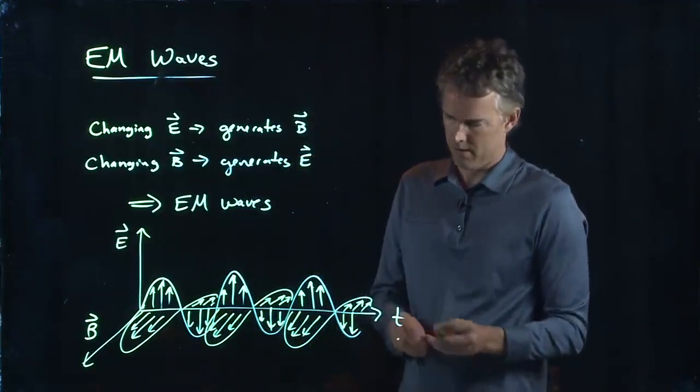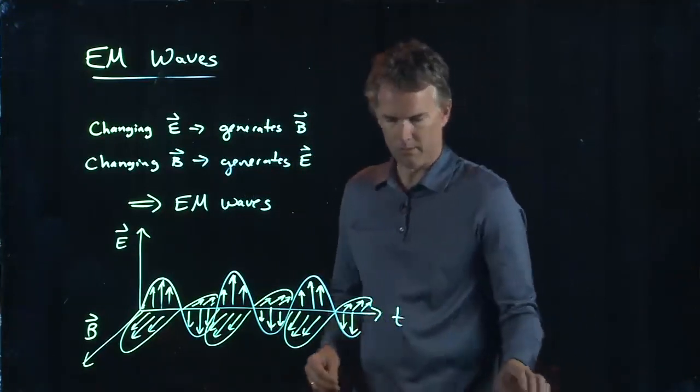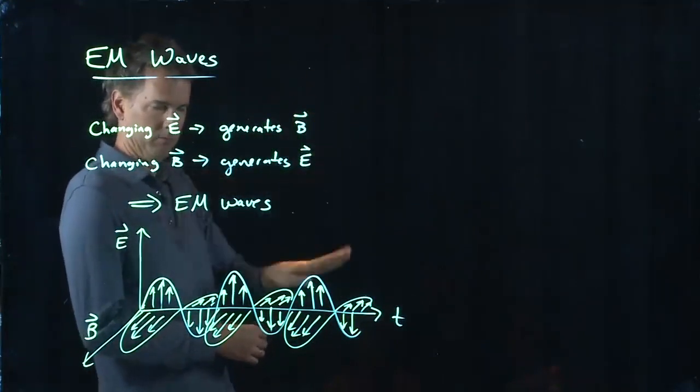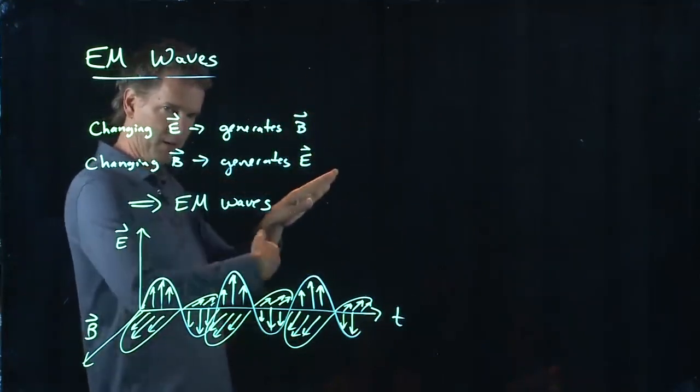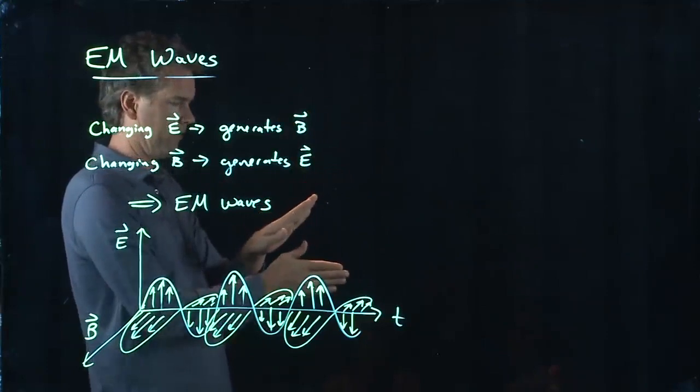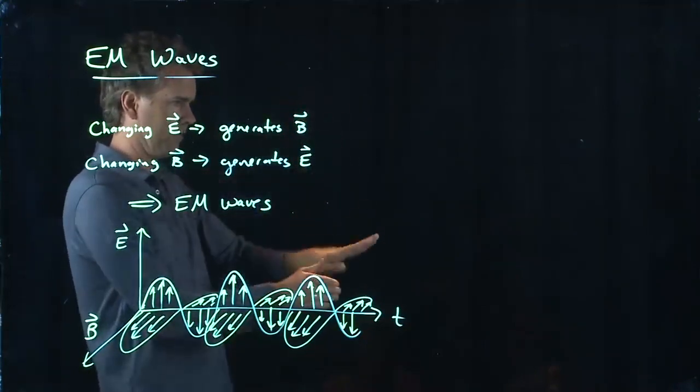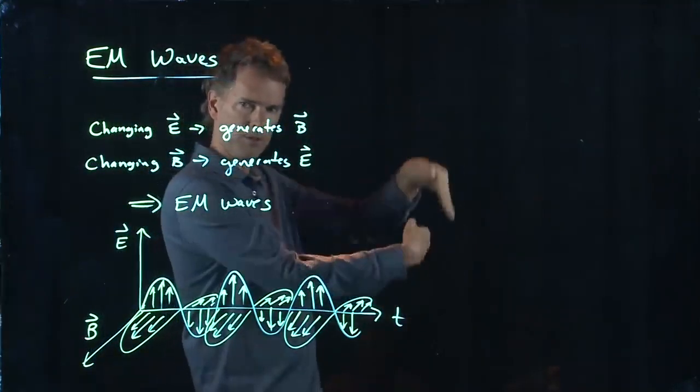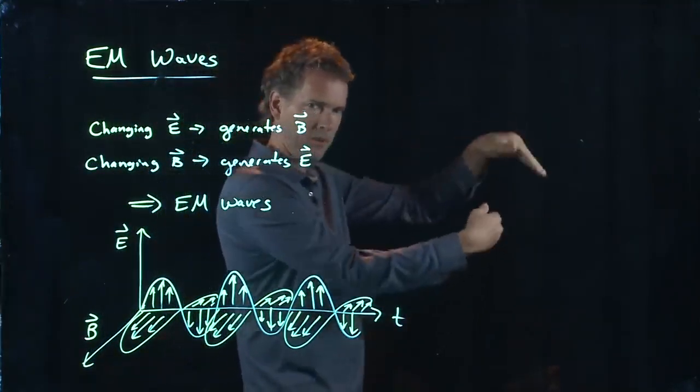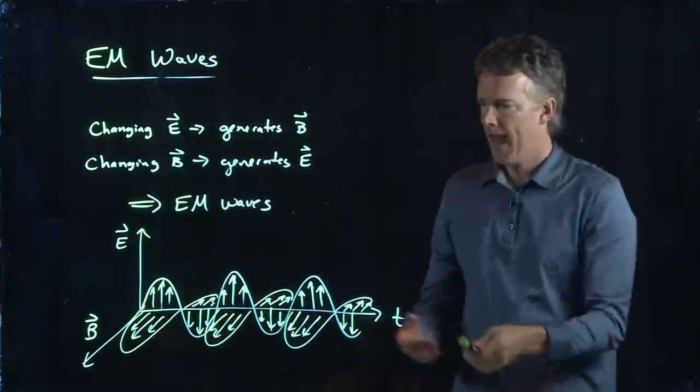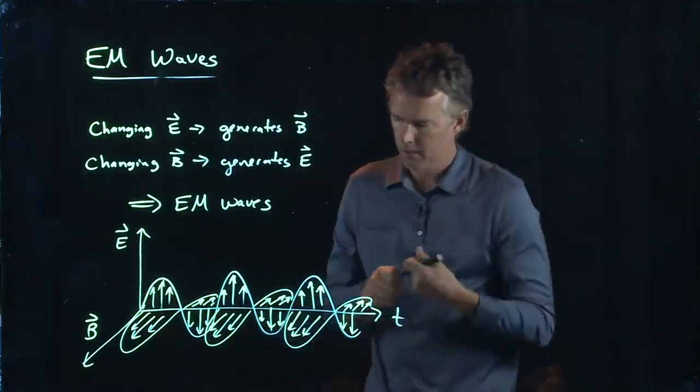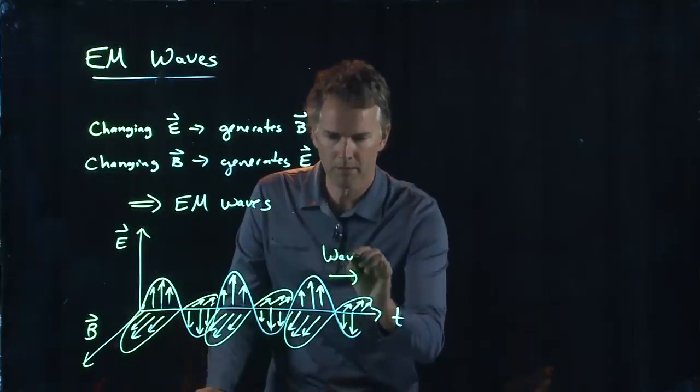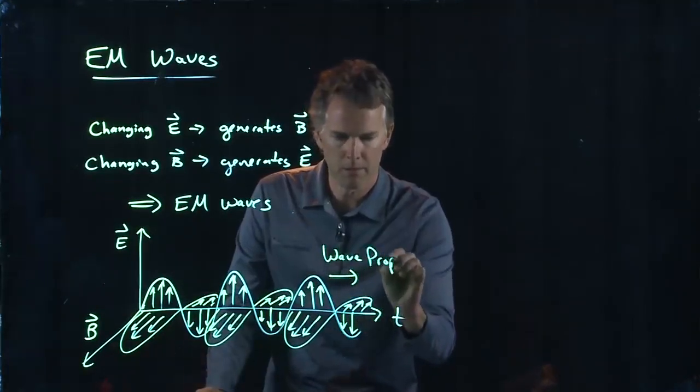So these things are doing something like this: E field is going up and down, B field is going in and out, and they're sort of doing this. It's like two fish swimming along, one going up and down, one going left and right. And as this happens, this entire thing propagates to the right.